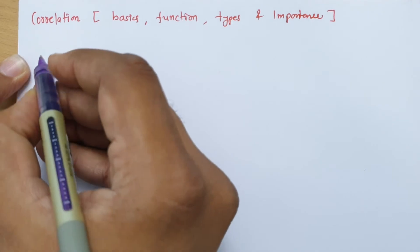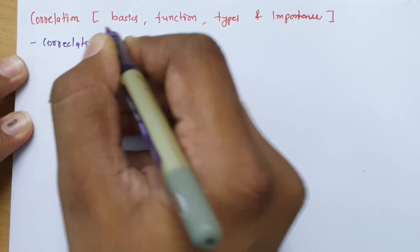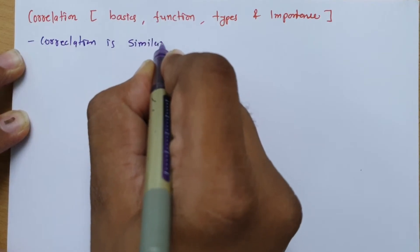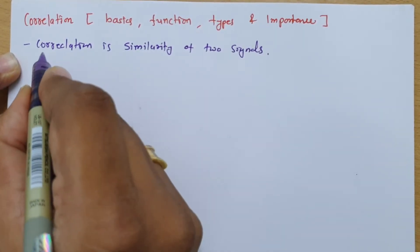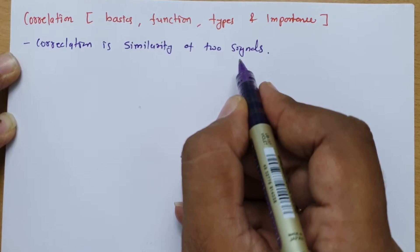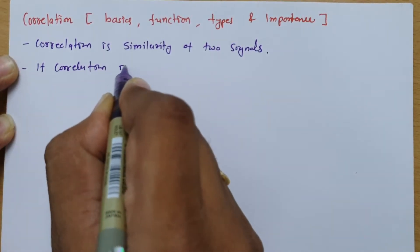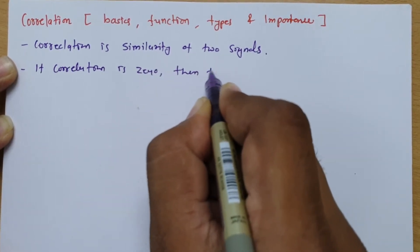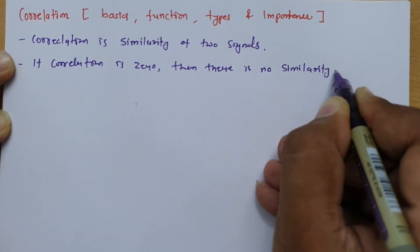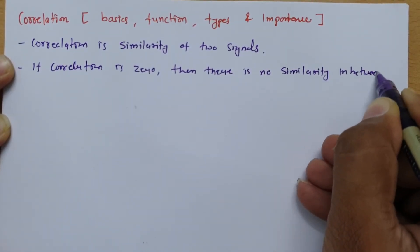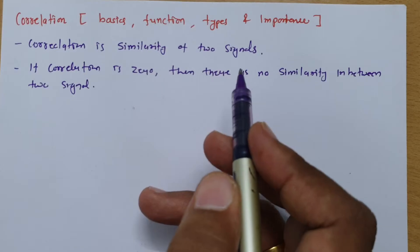So correlation explains similarity between two signals. The basic definition: correlation is similarity of two signals. If the correlation value is zero, then there is no similarity between the two signals. So basically, correlation is a measure of similarity between two signals.